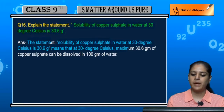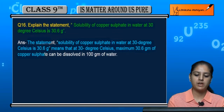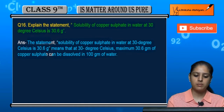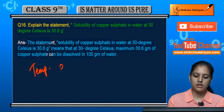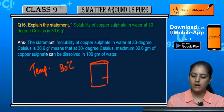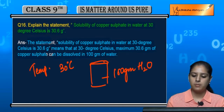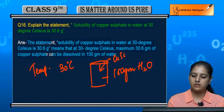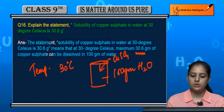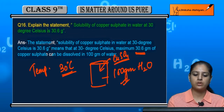The meaning is that 30.6 grams is the maximum amount of copper sulfate we can dissolve in 100 grams of water at 30 degrees Celsius. We cannot add more than this amount of copper sulfate at this temperature.